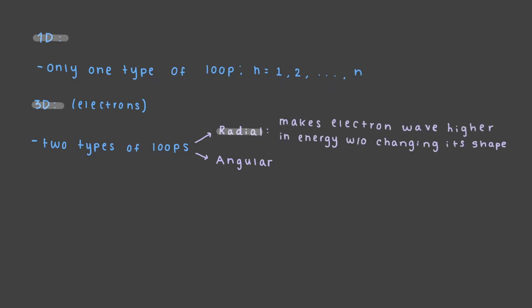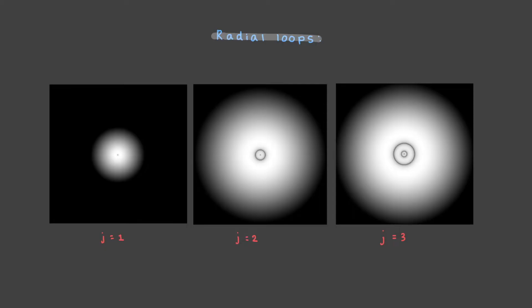Radial loops make the electron wave higher in energy without changing its shape. Radial loops look like concentric rings around the nucleus. We can use j to refer to the number of radial loops.